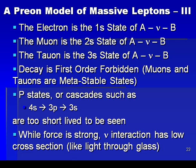We have just seen how our analogy with the hydrogen atom has led to a proposal that the muon will be in the 2s state of a composite system, and that the electron could be in the 1s state. Of course, there is a third lepton, the tauon, that also has properties nearly identical to the muon and the electron, but with a heavier mass. In the model proposed here, it is easy to identify the tauon as being the 3s state of the same composite system. Note that the decay of the muon into the electron is first order forbidden, just as is the case of the decay of the hydrogen 2s state into the 1s state.